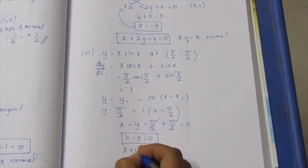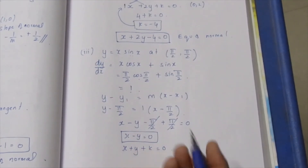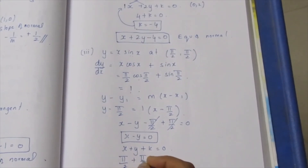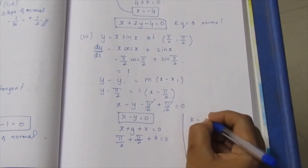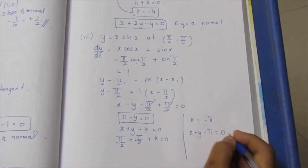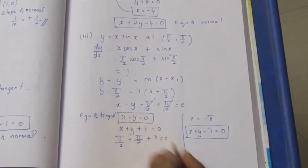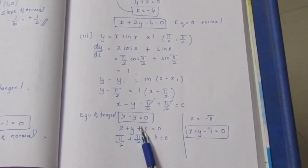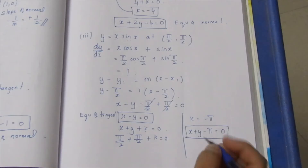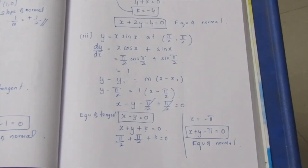For the normal: using the perpendicular coefficient method, x plus y plus k equals 0. Substituting the point (π/2, π/2) to find k, we write the k value. This gives the equation of the normal. We write these two equations — tangent and normal — using the easy method.